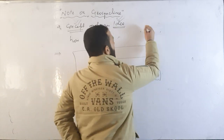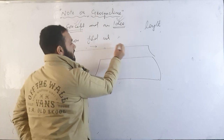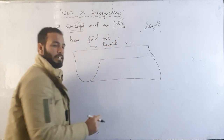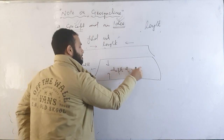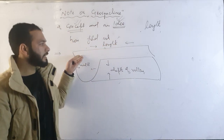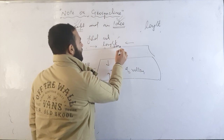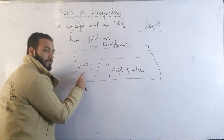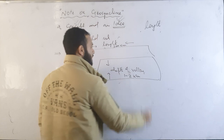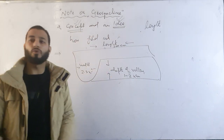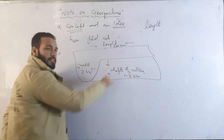They said the length of this valley is comparatively much more than its width and depth. For example, the valley's length is around 3000 kilometers, while width is about 2 to 3 kilometers and depth is 1 to 2 kilometers. When writing a note on geosyncline, please make sure to include the diagram.